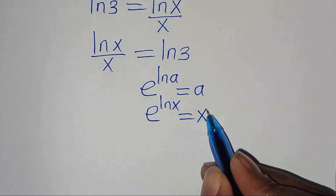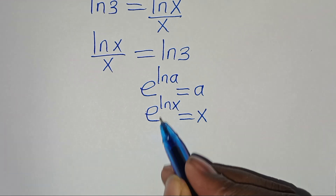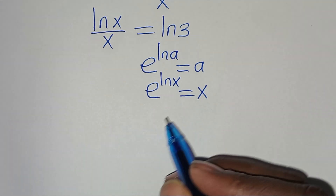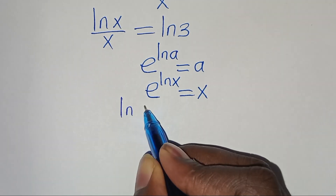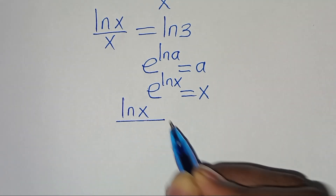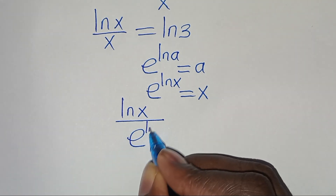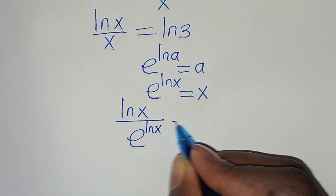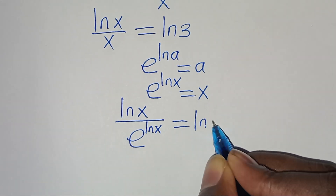Now, substituting x with e to the power of ln(x), this implies that we have ln(x) divided by e to the power of ln(x), equal to ln(3).